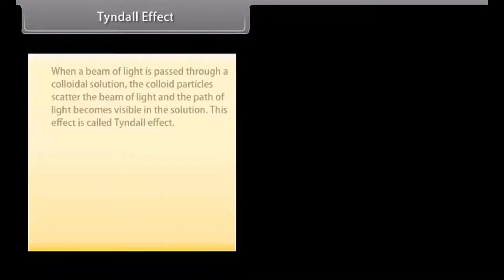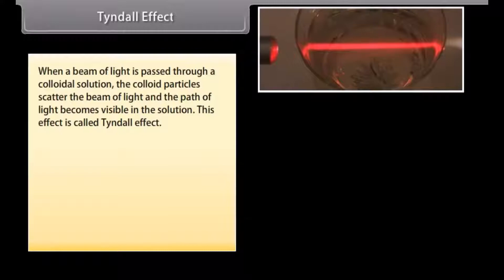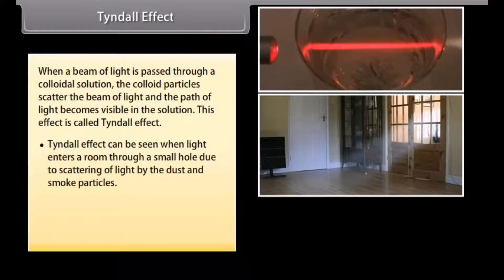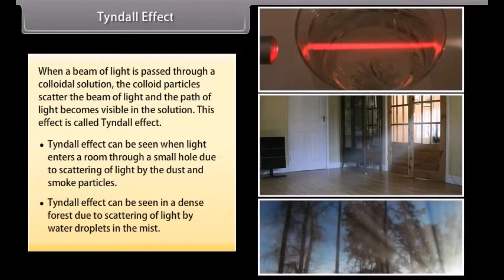Tyndall effect. When a beam of light is passed through a colloidal solution, the colloidal particles scatter the beam of light and the path of light becomes visible in the solution. This effect is called the Tyndall effect. It can be seen when light enters a room through a small hole due to scattering of light by dust and smoke particles. It can also be seen in a dense forest due to scattering of light by water droplets in the mist.